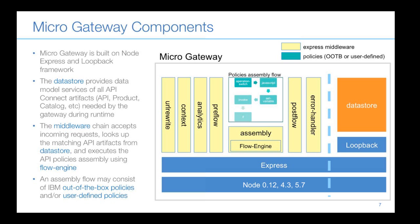Next, control passes to the context middleware, which creates a context object — a transaction-wide data object used to store transactional information such as the request body and API definition. Think of it as a big whiteboard where you can put and retrieve information. After that, control passes to the analytic middleware, which gathers incoming transaction data and stores API usage information to the configured analytics server on the API management server side.